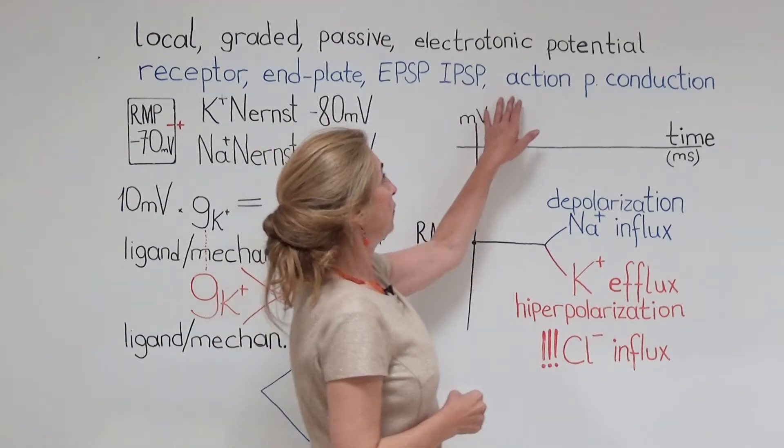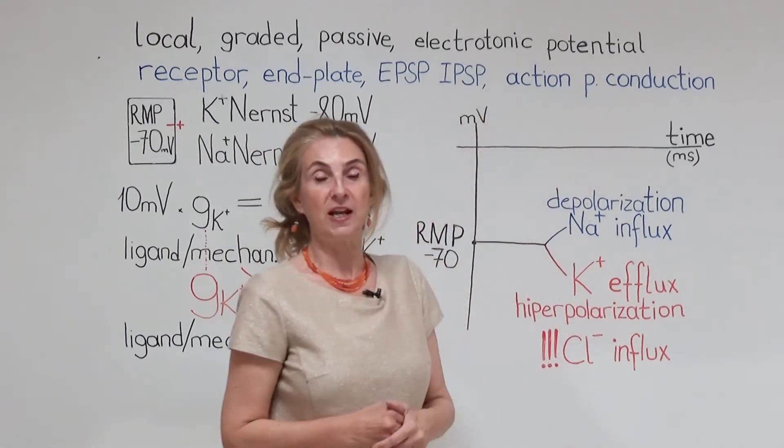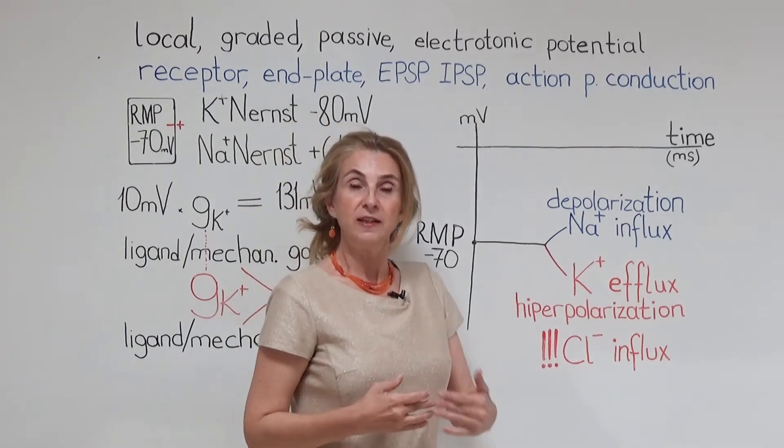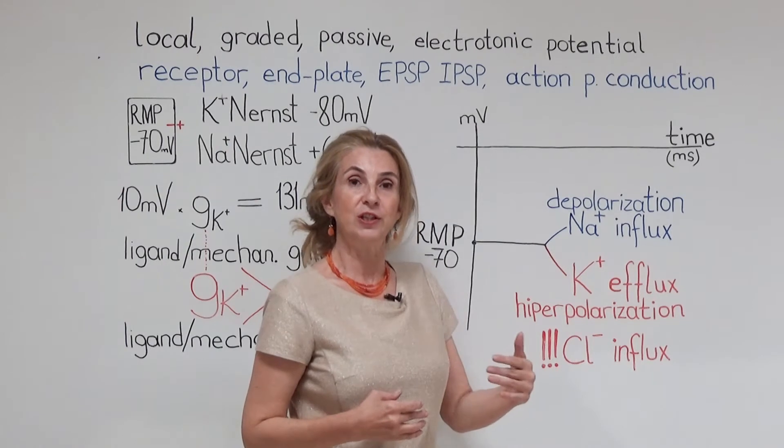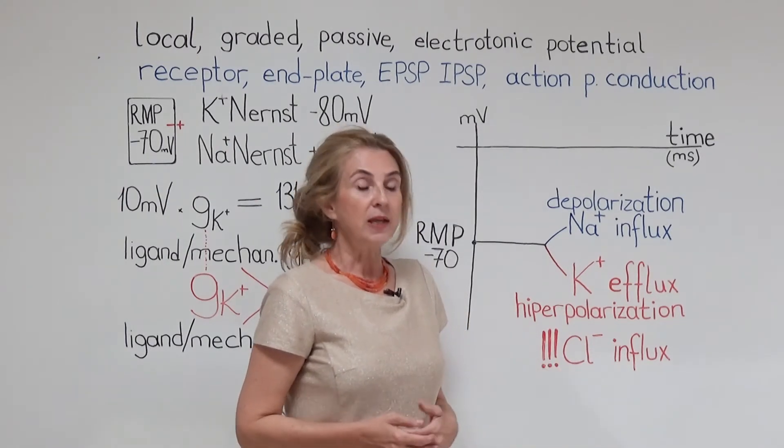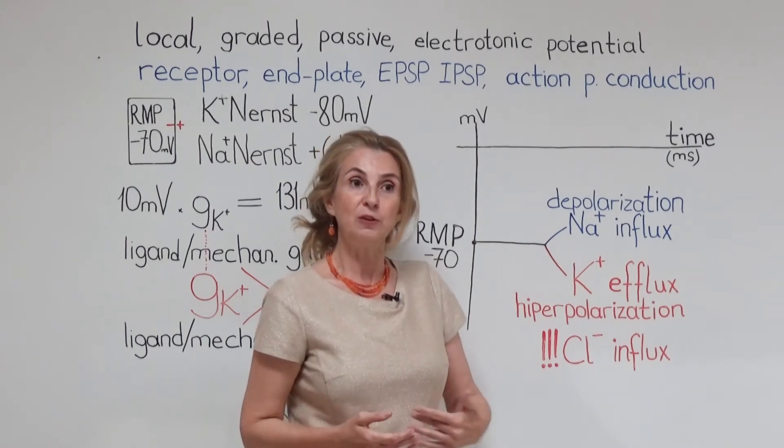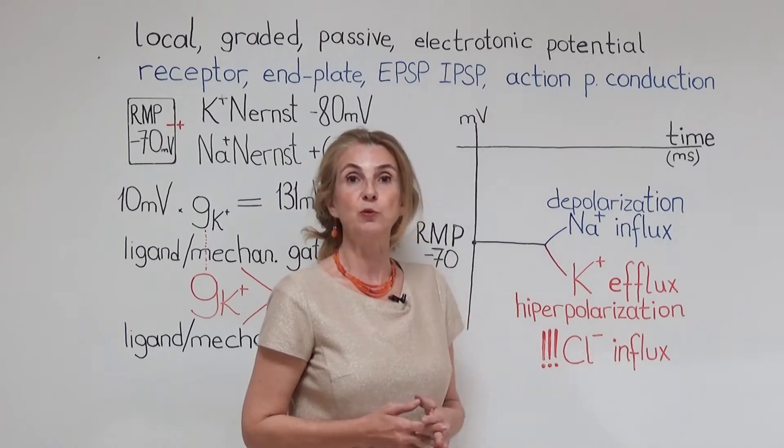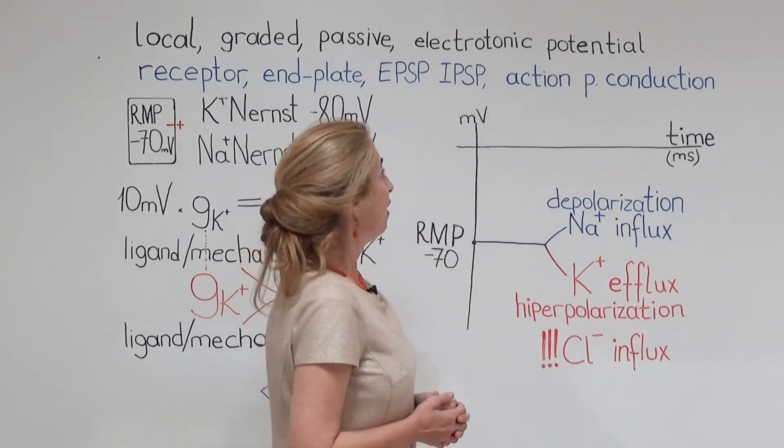Local potentials also form during the conduction of an action potential. For example, in a myelinated nerve, there is an electrotonic conduction under the myelin until the next node of Ranvier. In non-myelinated neurons, there is an electrotonic conduction to the neighboring area, just next to where an action potential is formed.